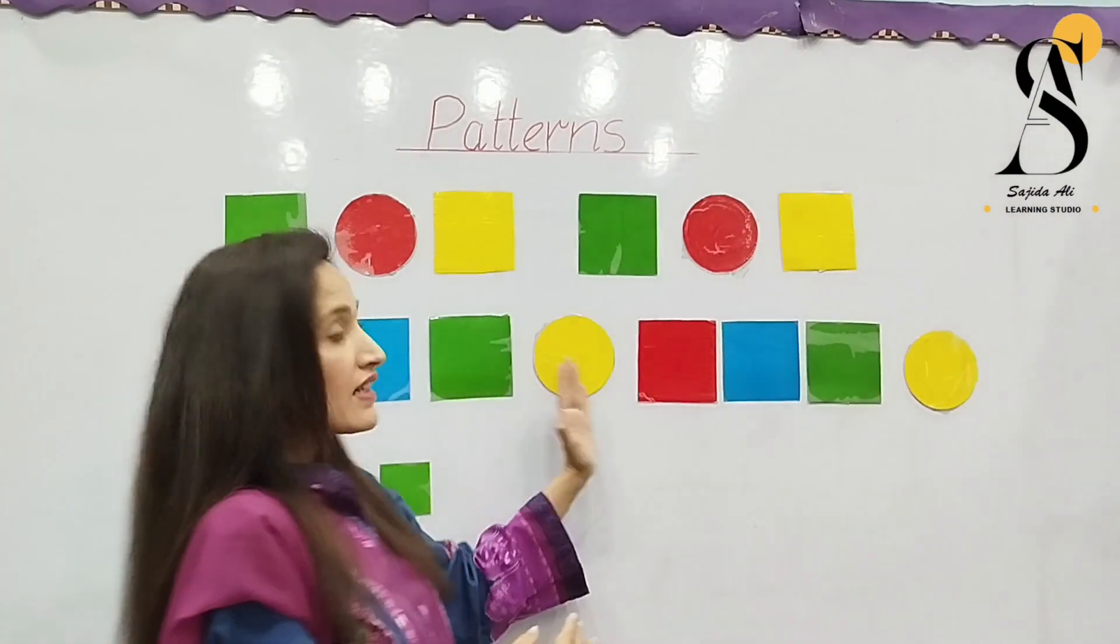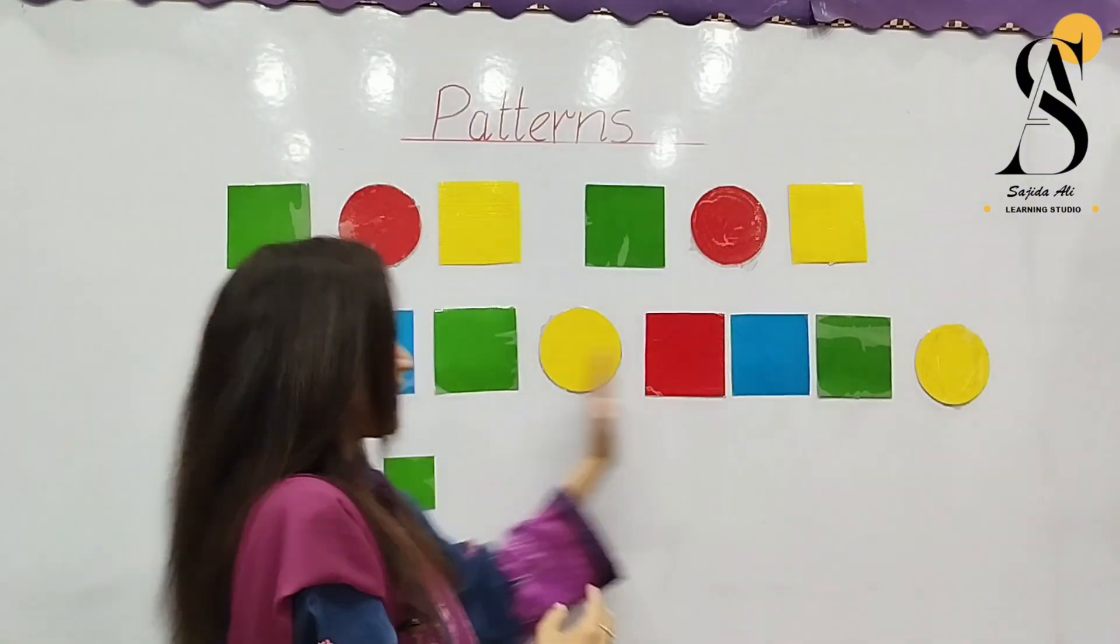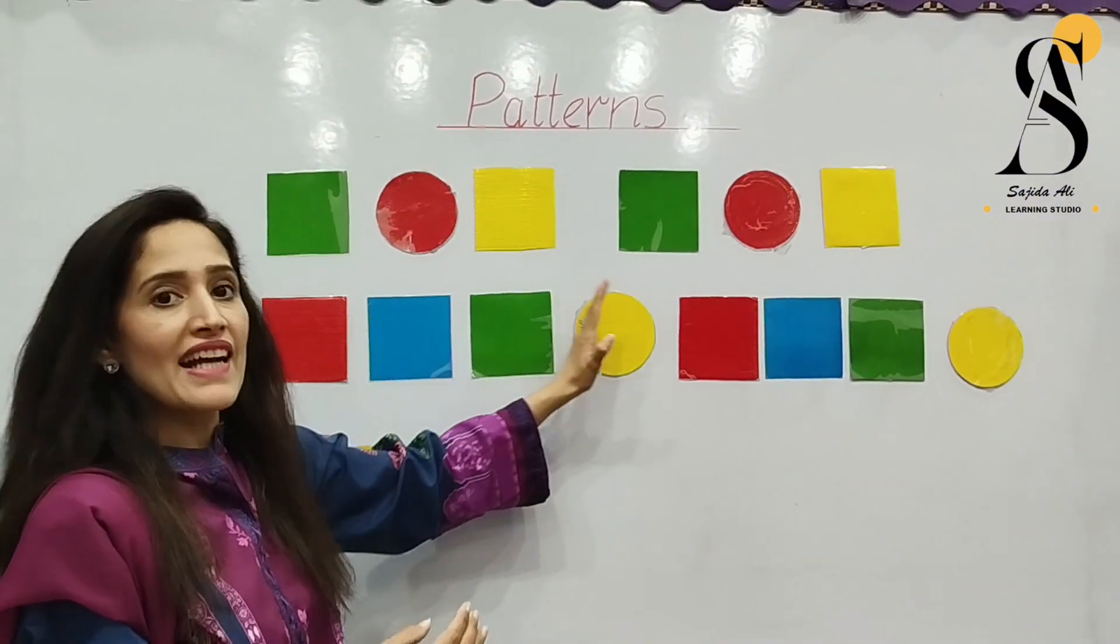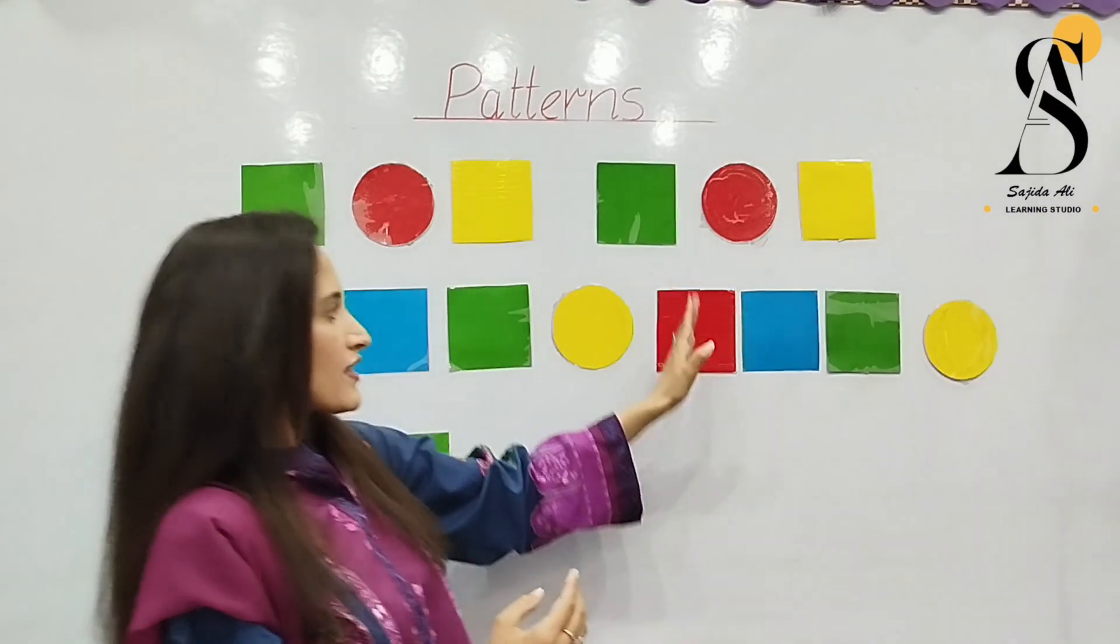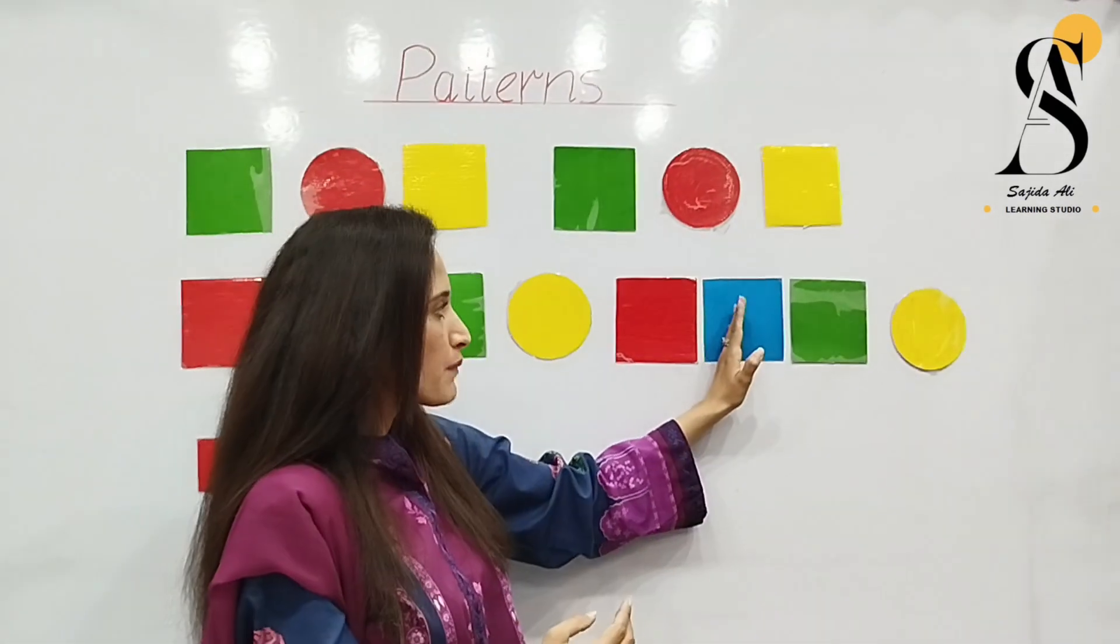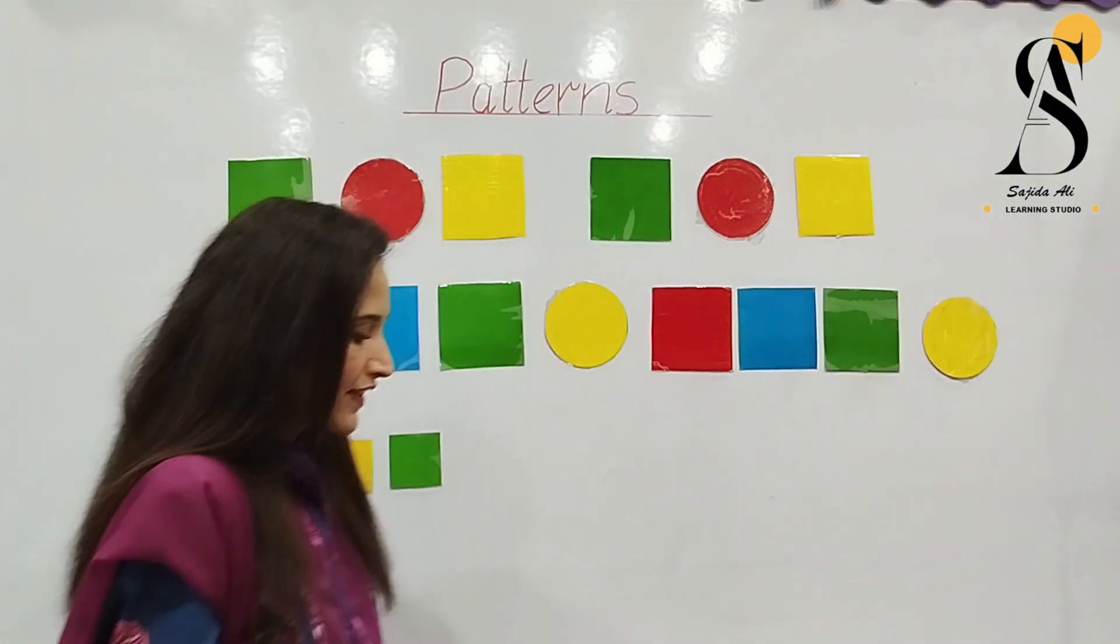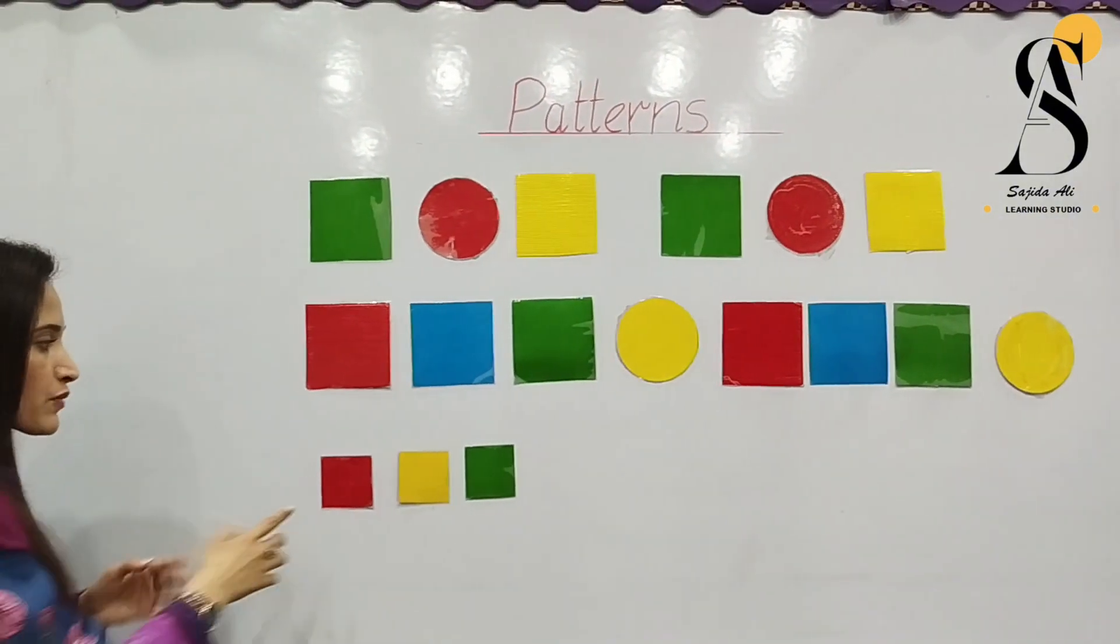We have repeated the pattern in same order. Like you can say, red square, blue square, green square and yellow circle. So same like that, red square, blue square, green square and yellow circle. Okay, let's see the next one.